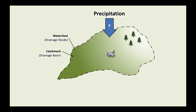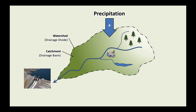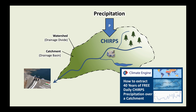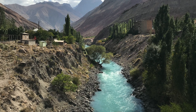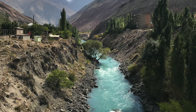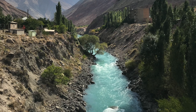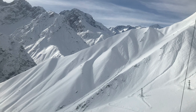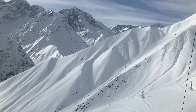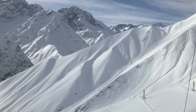Precipitation is the main input to the water balance, and in a previous video, I showed you how to download the free CHIRPS precipitation dataset for a catchment. If the precipitation falls as rain, it will end up in a stream or a river sooner or later. If it's cold and the precipitation falls as snow, it's a different story.